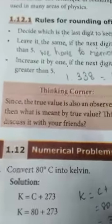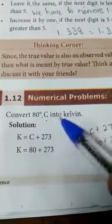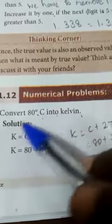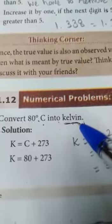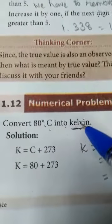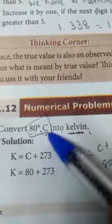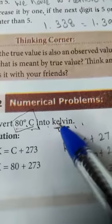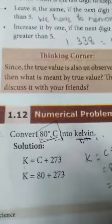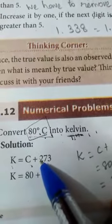Numerical problems. Convert 80 degree Celsius into Kelvin. You want to find out Kelvin. This is Celsius, 80 degree Celsius. The formula is C plus Kelvin value. C plus how much? 273.